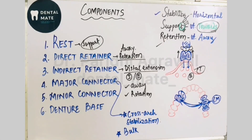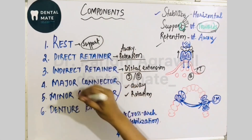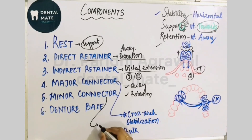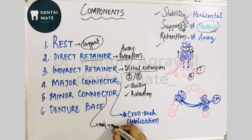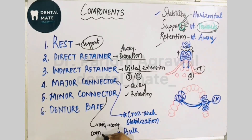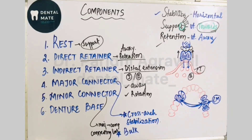The minor connector is the connecting link between the various other components and the major connector. The denture base covers the residual ridge and supports the denture teeth.